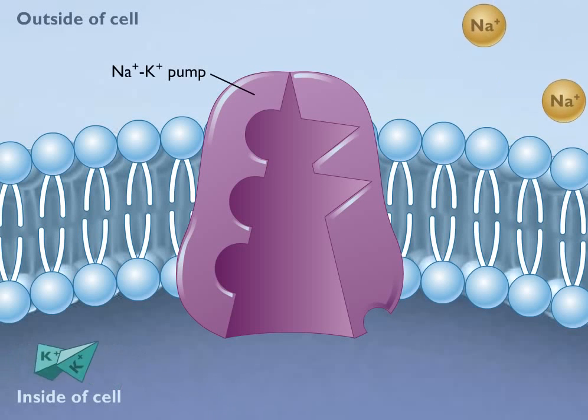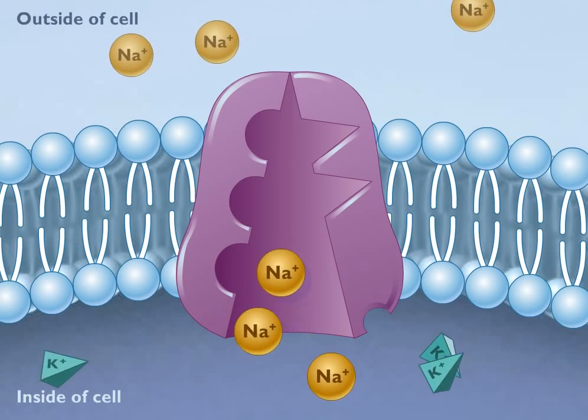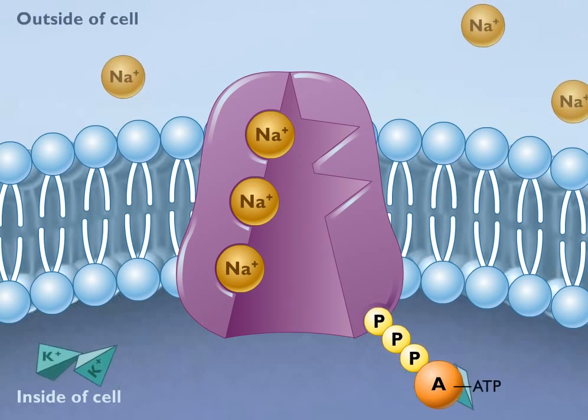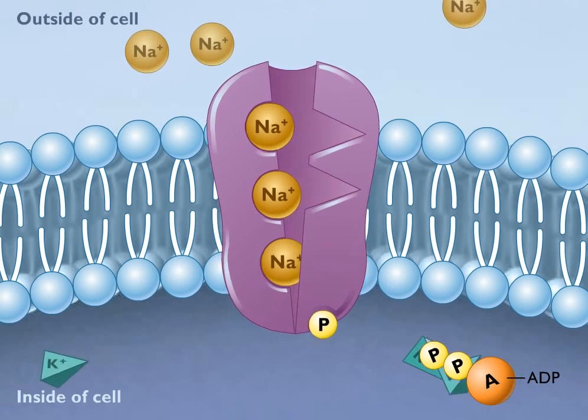The sodium-potassium pump is an active transport mechanism. Three sodium ions bind to the protein channel, and an ATP provides the energy to change the shape of the channel that in turn drives the ions through the channel.